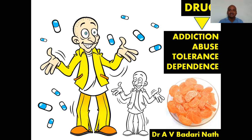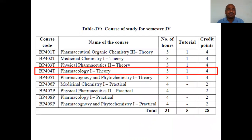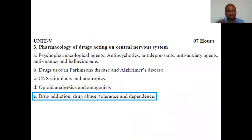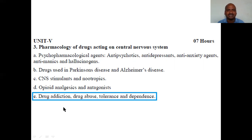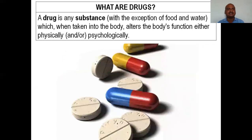We are studying pharmacology — a very important theory subject — and we have come to the last part: unit five, as per the syllabus of the Pharmacy Council of India. This is very important for all medical and paramedical students. The syllabus covers four terms: drug addiction, drug abuse, drug tolerance, and drug dependence. Since drug dependence and drug addiction are the same, there are effectively three headings.